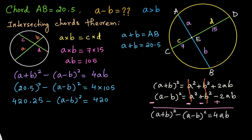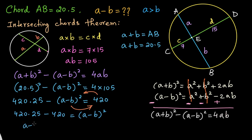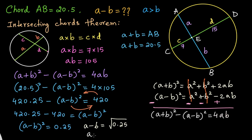Now we need to find A minus B whole square. We take the term to the other side: 420.25 minus 420 equals A minus B whole square. So A minus B whole square equals 0.25. To find A minus B, we take the square root on both sides, giving A minus B equals plus or minus 0.5.